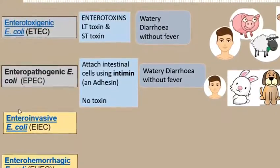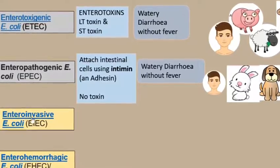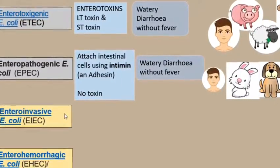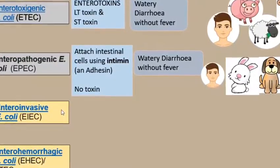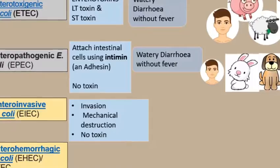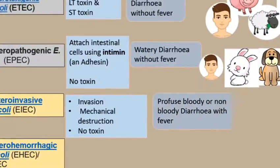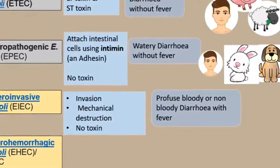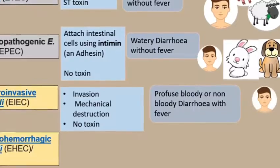The third one is enteroinvasive E. coli (EIEC). This also does not produce toxins. Instead, they invade the epithelium of the intestine and cause mechanical destruction. This causes profuse bloody — sometimes non-bloody — diarrhea with fever. It mainly affects humans.